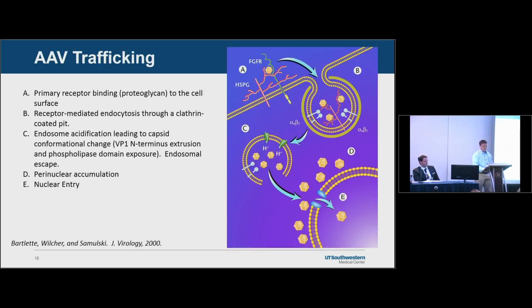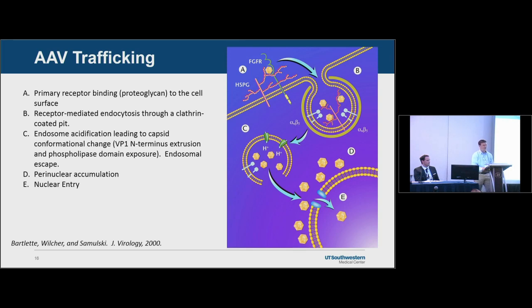For AAV cellular trafficking: AAV binds to the cell surface via a primary receptor, which is typically some type of proteoglycan, and a secondary receptor that mediates uptake through a clathrin-coated pit via receptor-mediated endocytosis. The endosome acidifies, prompting a conformational change in the AAV capsid where the N-terminus of VP1 and VP2 gets extruded. These have a phospholipase domain that lyses the endosome membrane, releasing AAV to travel to the nucleus, where it releases the AAV genome.